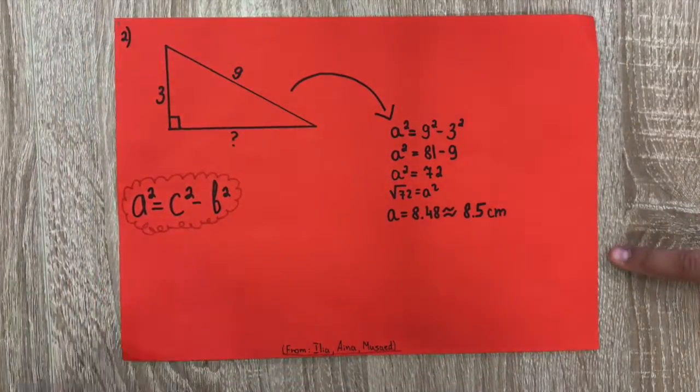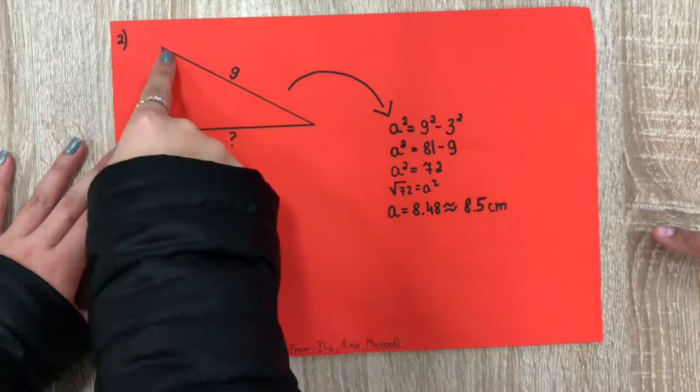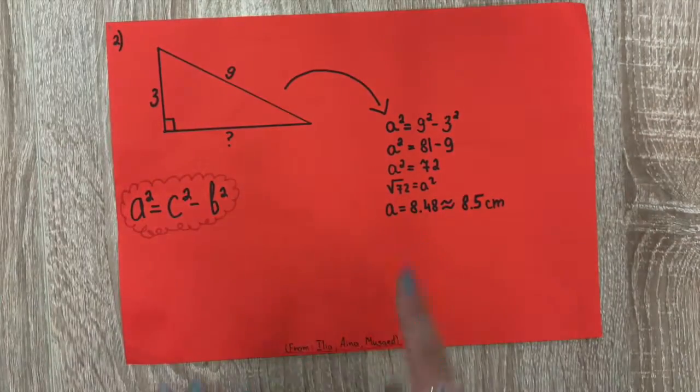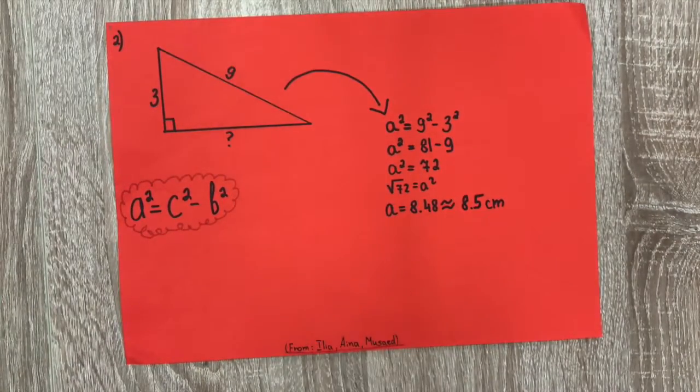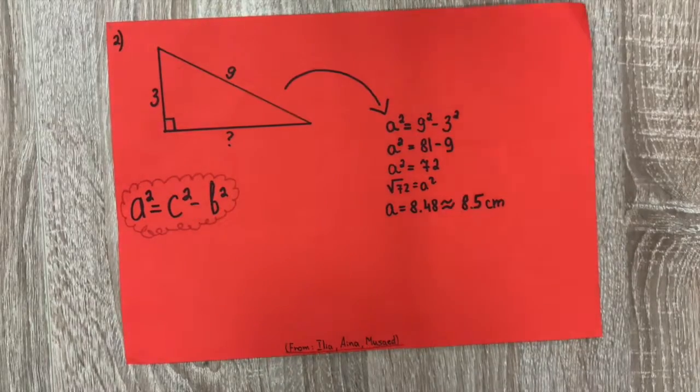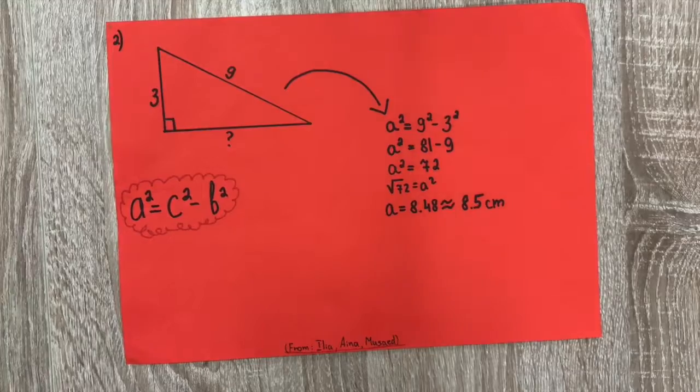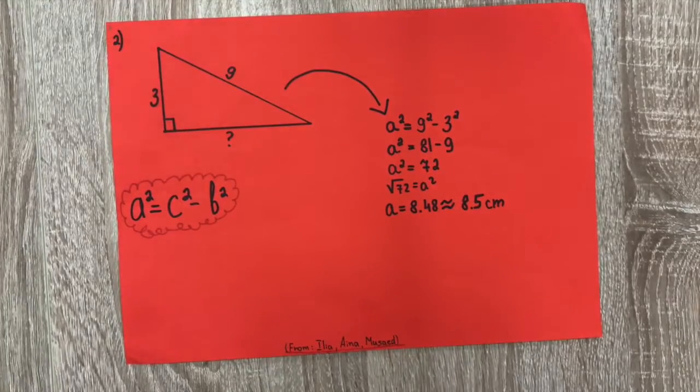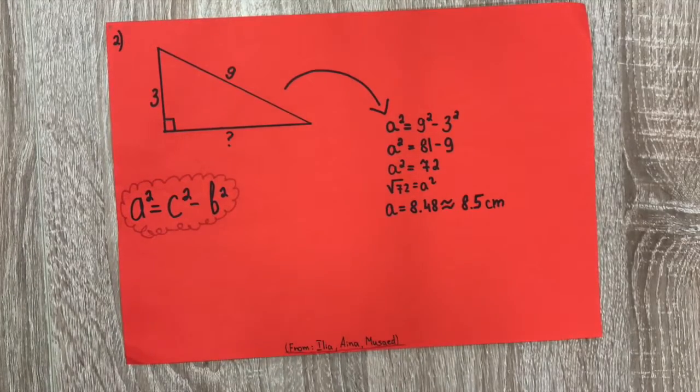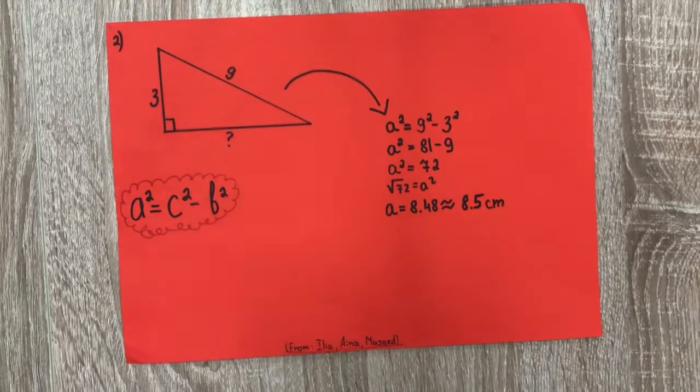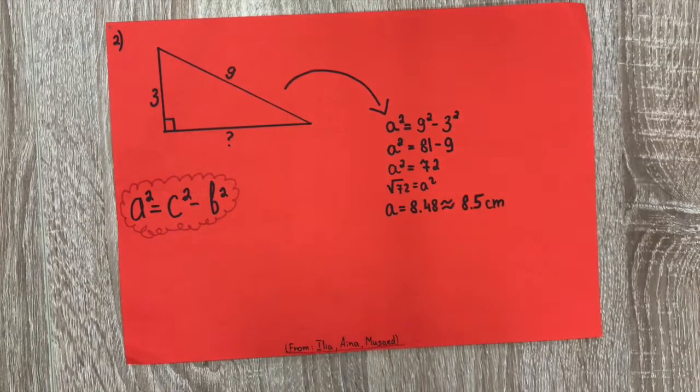This is another example. This is 3 and 9. This is a hypotenuse. 9² equals 81, 3² equals 9. 81 minus 9 equals 72. Square root of 72 equals 8.48, around 8.5 centimeters.